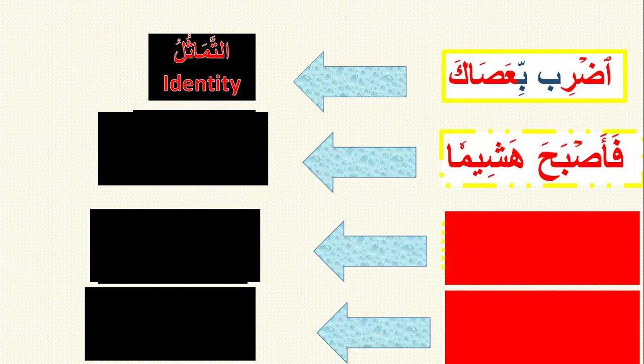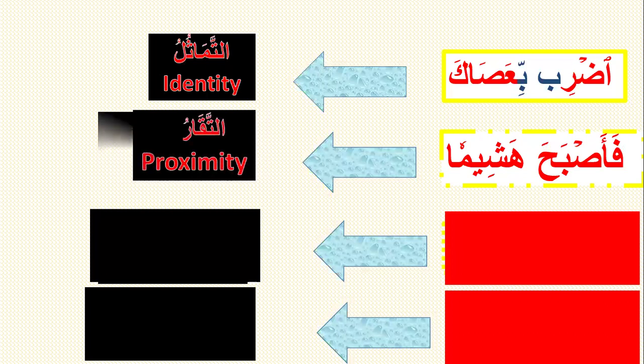Between letter ha and letter ha: both are throat letters with the same articulation point, but they have different characteristics. So what is the relationship? It is proximity (Al-Taqarib). Why? Because ha and ha share the same articulation point but differ in position — one is from the deepest part of the throat and the other from the middle part.